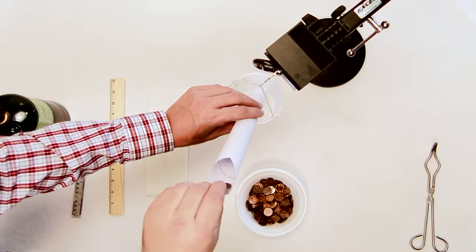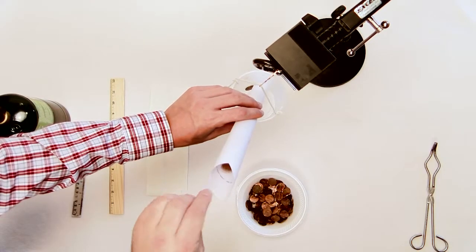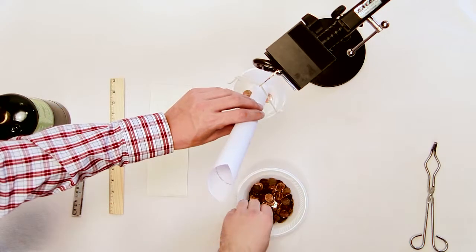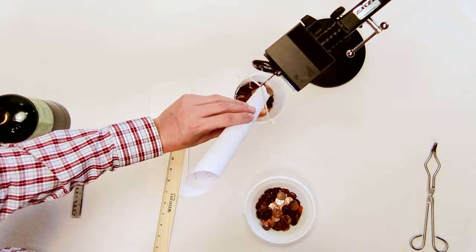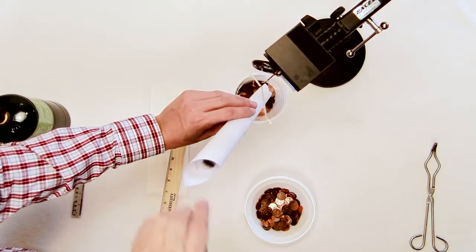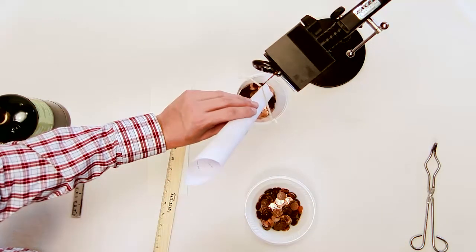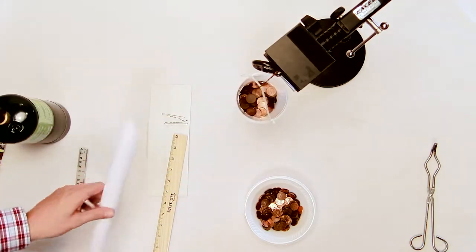Create a paper funnel by rolling a piece of paper and either stapling it or taping it. Using the funnel, start placing pennies into the cup one at a time. The pennies should be funneled in at a steady pace, but in a way that they do not fall a large distance when they enter the cup. Add a total of 300 pennies to the cup.